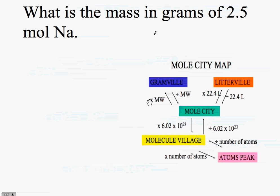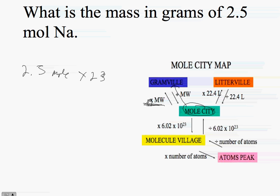What is the mass of 2.5 moles of sodium? I have 2.5 moles of sodium, and since I'm talking about mass, I want to go from moles to grams. In order to do that, I multiply by the molecular weight of sodium, which is 23, and I get that from the periodic table. So 2.5 times 23 is 57.5 grams.